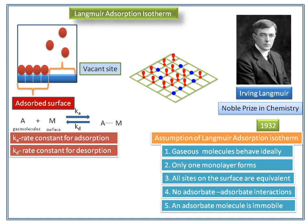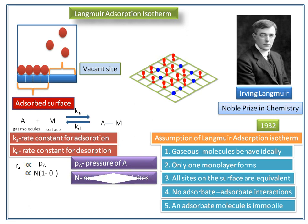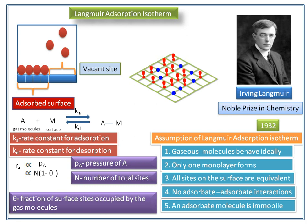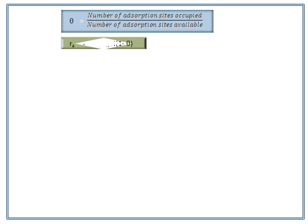The rate of adsorption is directly proportional to the partial pressure of A and the number of vacant sites on the surface. Pa is the partial pressure of A, N is the total number of sites, and theta is the fraction of surface sites occupied by the gas molecule. Therefore, the rate of adsorption Ra equals Ka × Pa × N × (1 − θ), where theta is calculated as the number of occupied adsorption sites divided by the number of available sites.